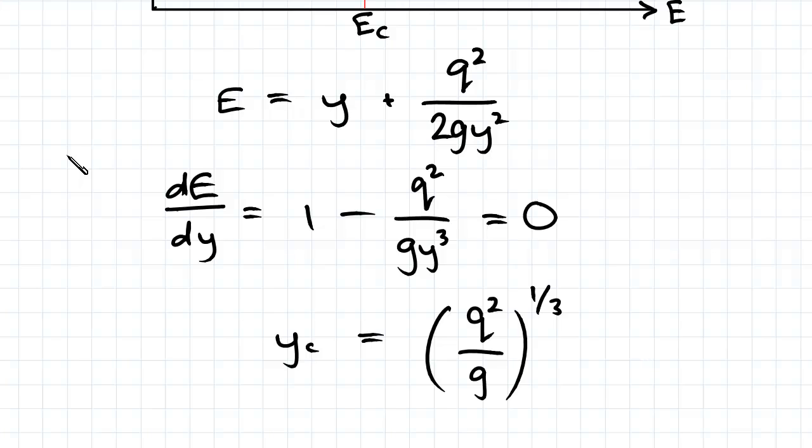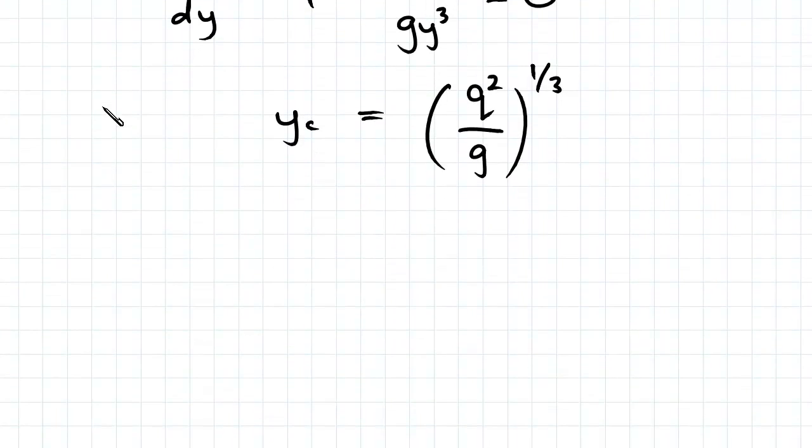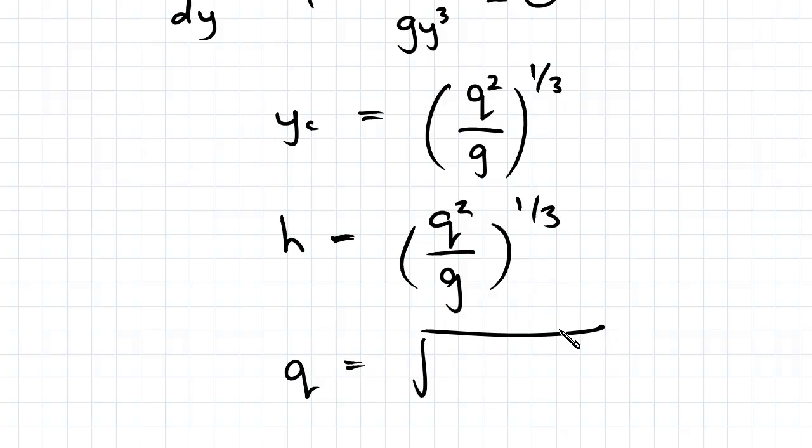So subbing H in for our Yc we get H equals Q squared on G to the power of 1 on 3. Rearranging for Q we get Q equals the square root of GH cubed.